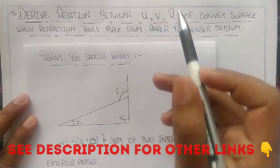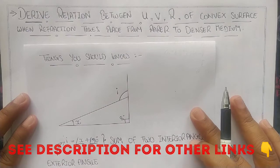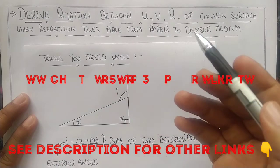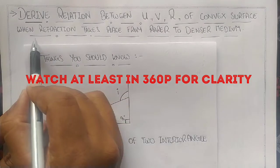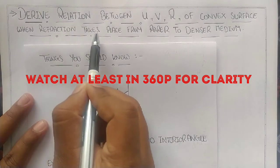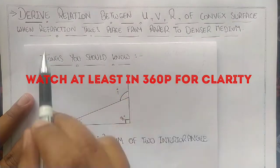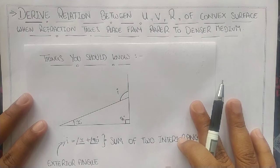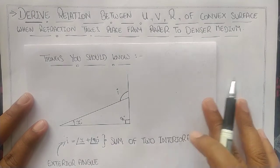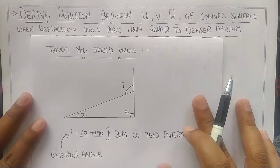U, V, and R are object distance, image distance, and radius of curvature. This particular derivation is when refraction takes place from rarer to denser medium. This is an important derivation from the chapter Ray Optics and Optical Instruments.